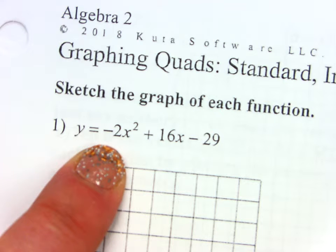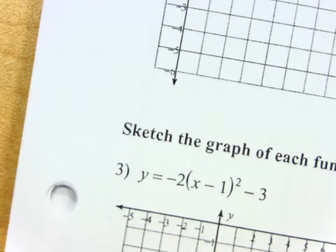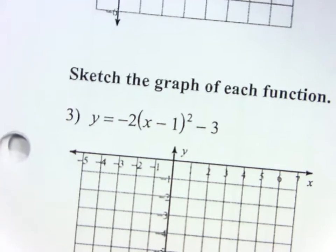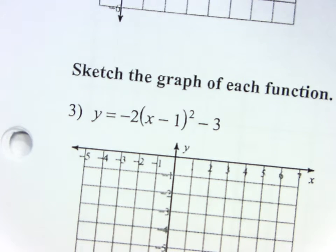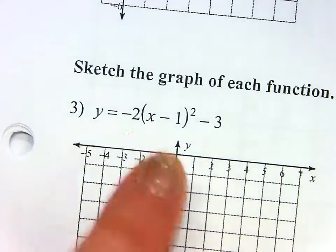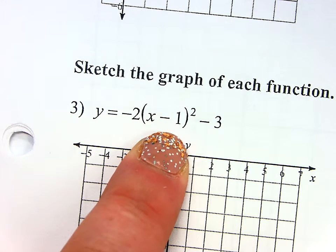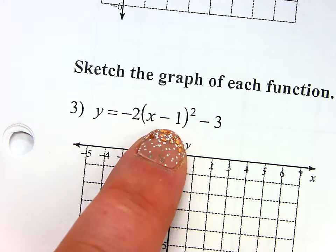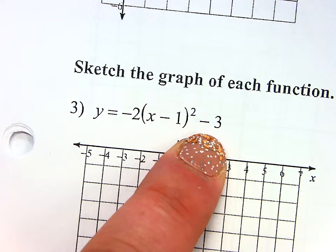It also tells you how to get from the vertex to the next point. Look at number three. What form is that? That's vertex form. That's what we learned yesterday. The vertex you can get just by looking at it. It's the opposite of that number in there with the X, comma that number on the outside.